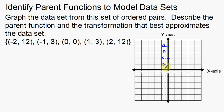So I'm going to graph this. There's going to be negative 2 and then 12, which is all the way up here. Then negative 1, 3 right here. Then 0, 0 right there at the origin. Then 1, 3. Got to be careful — if I change the increments I go up by 3s, not by 1s, I almost made that mistake. And then 2, 12. It's handy to put those numbers on the side so you can see them as you're graphing.